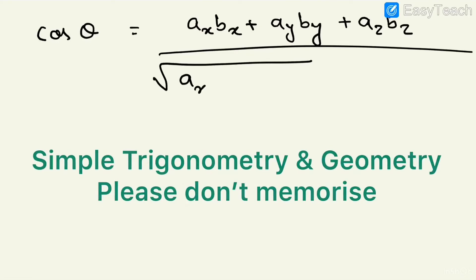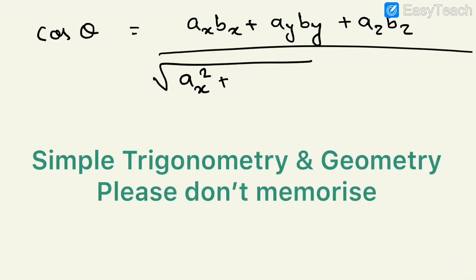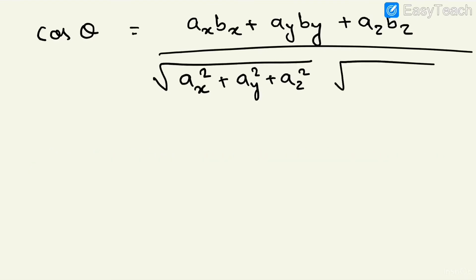Modulus of A in component form is the square root of ax² plus ay² plus az². Modulus of B is the square root of bx² plus by² plus bz². So cos-inverse of this whole expression gives you the angle theta — the angle between the two vectors.